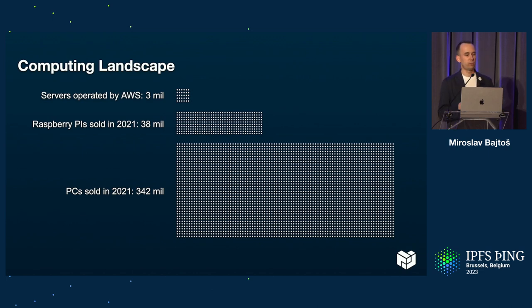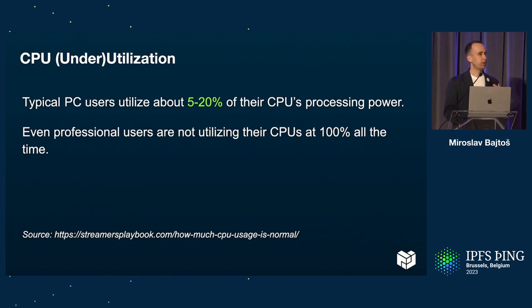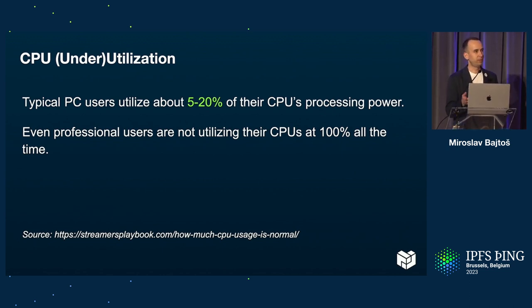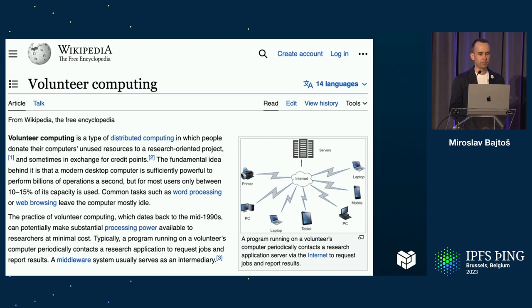Imagine we have all of these machines all around the world and they are sitting mostly idle. Even now as I'm presenting, 15 of my 16 cores are just idling, waiting for work to do. It would be super nice if we could put all these idle resources to work. This is not a new concept — it's called volunteer computing, which was coined in the 90s.